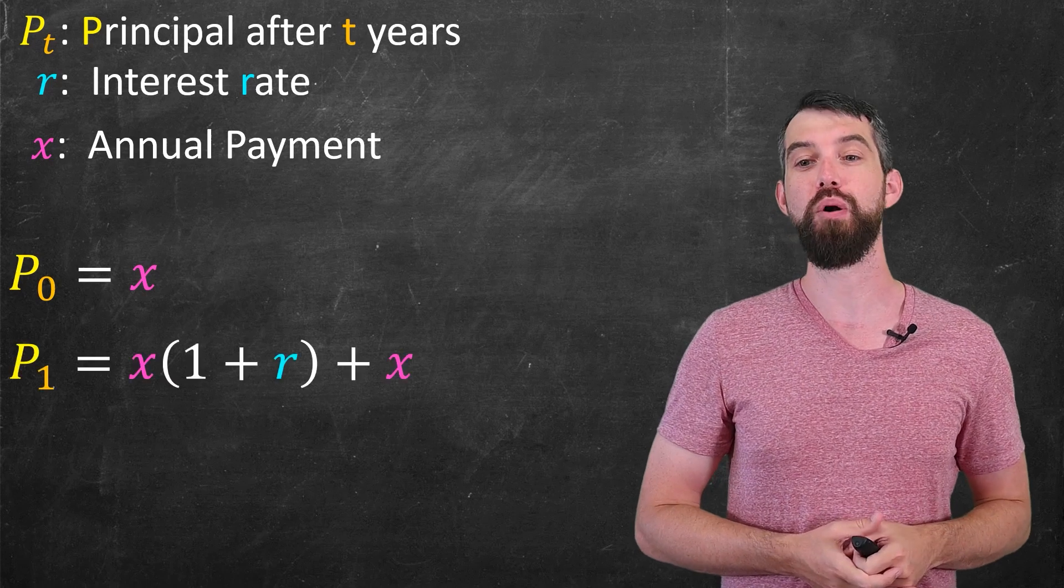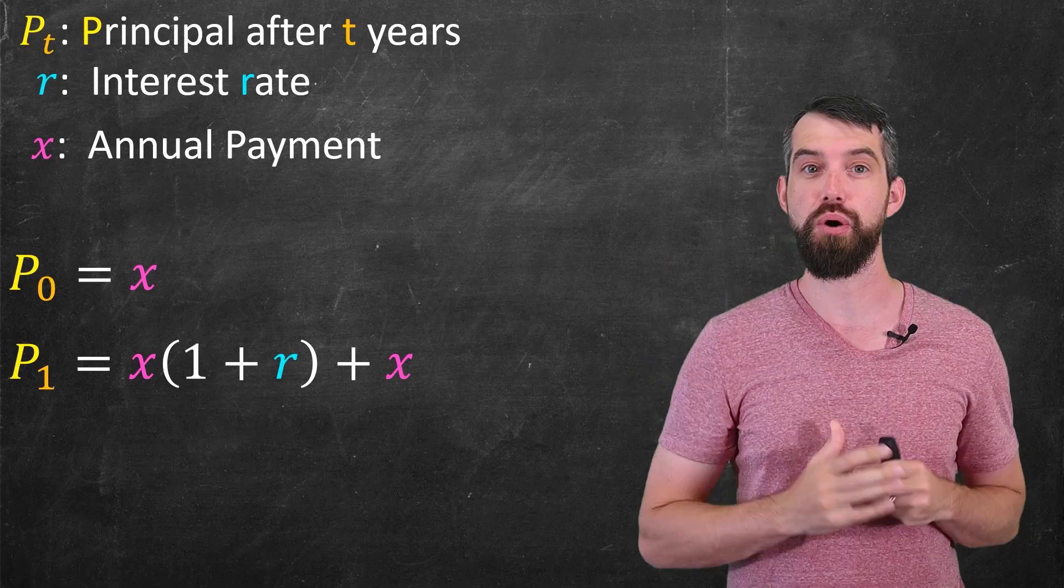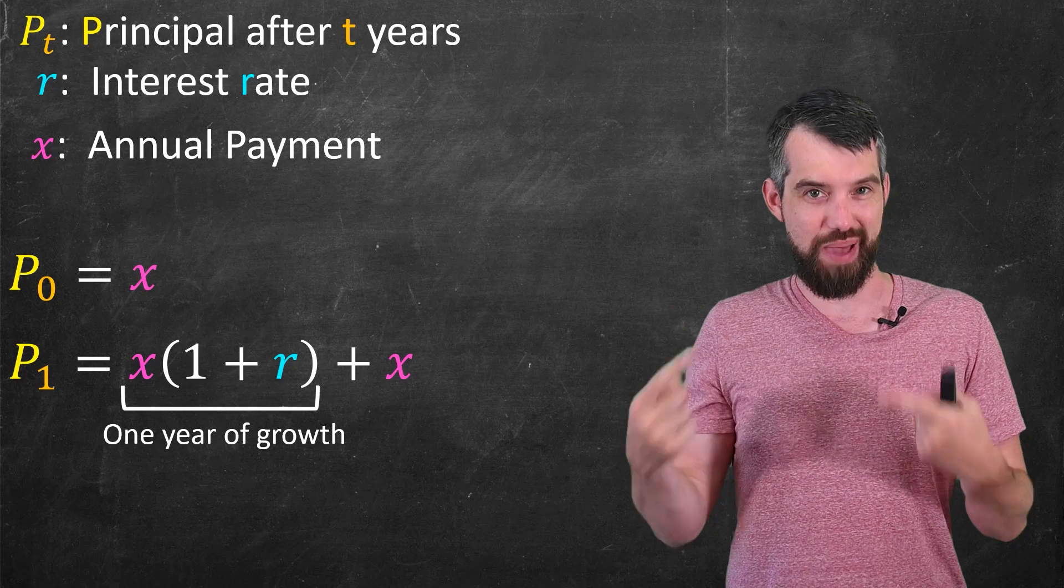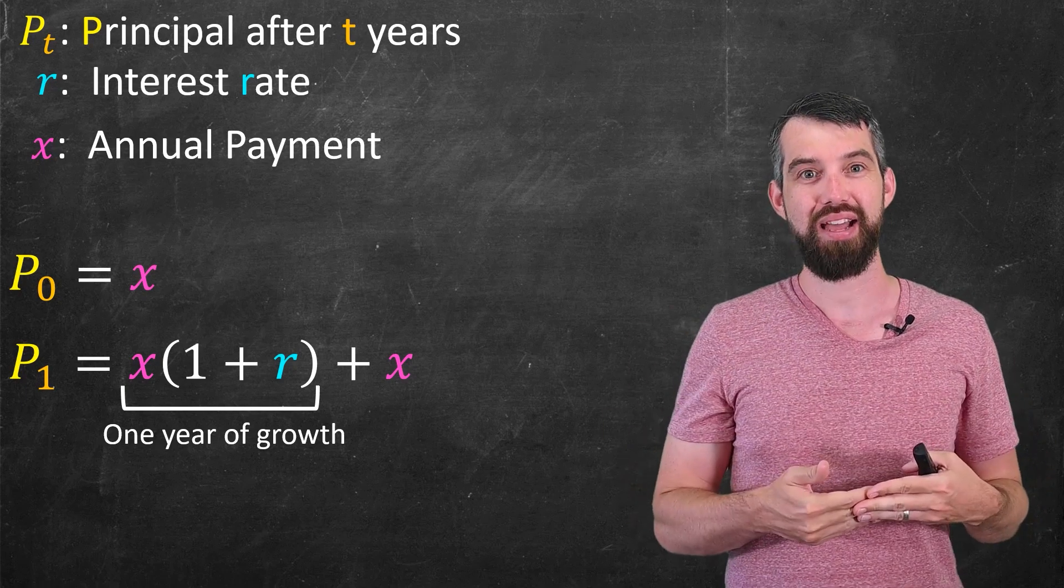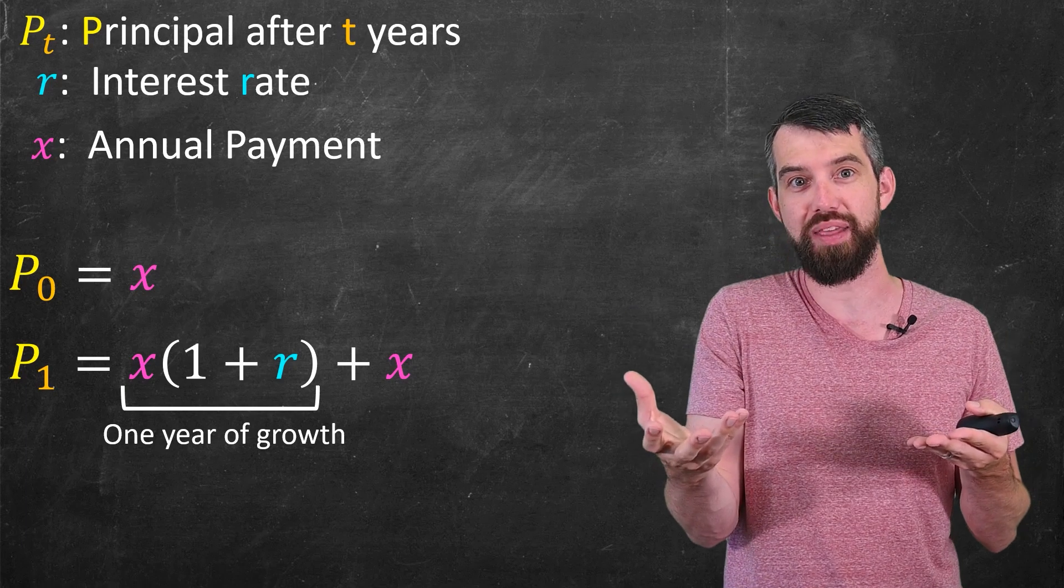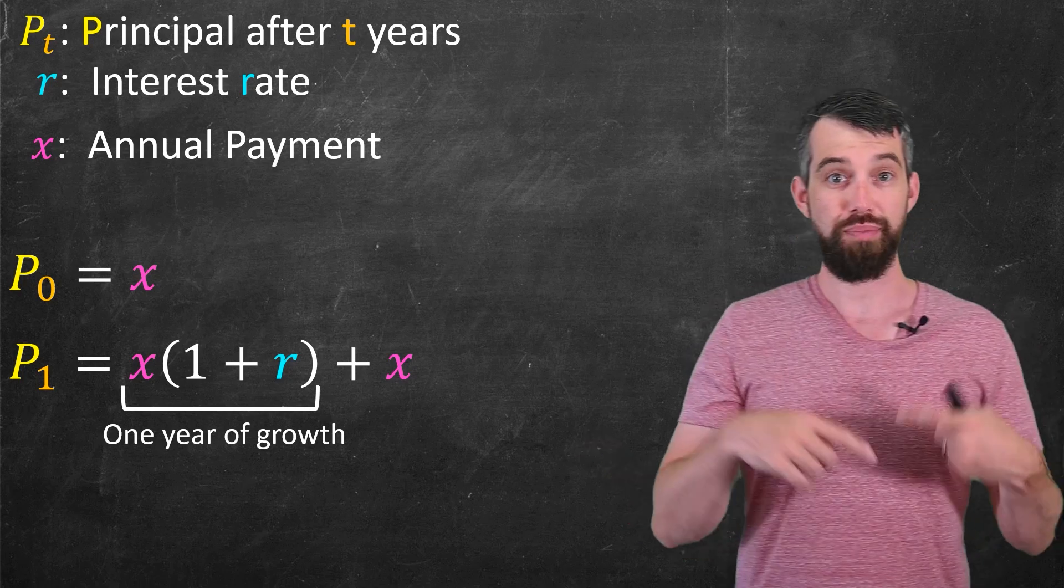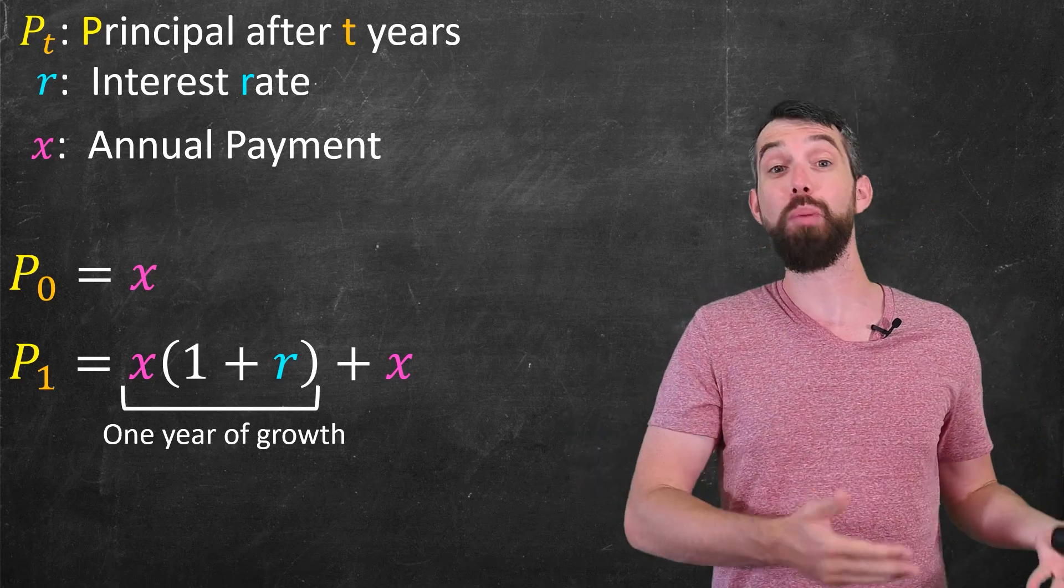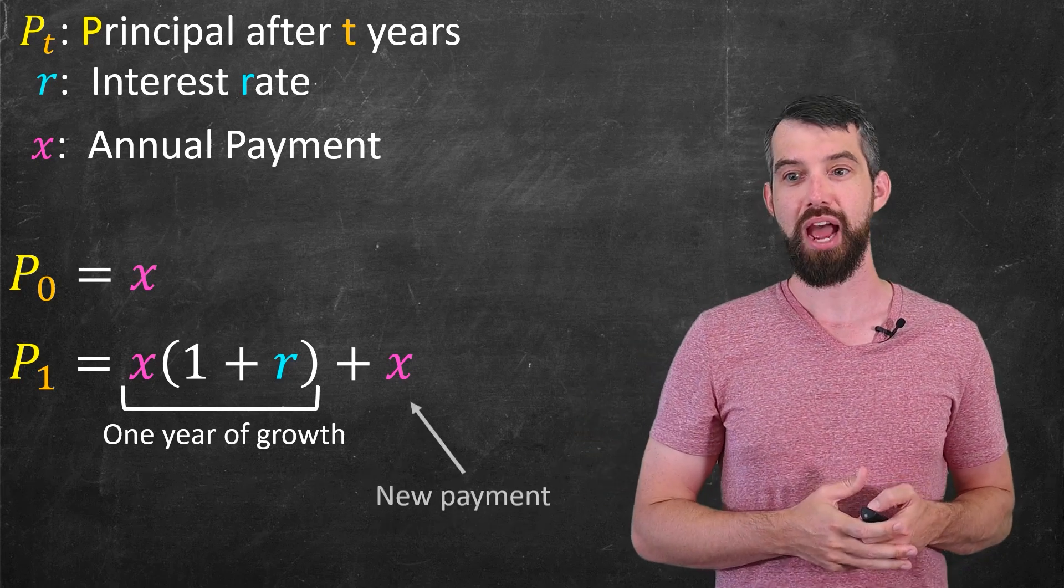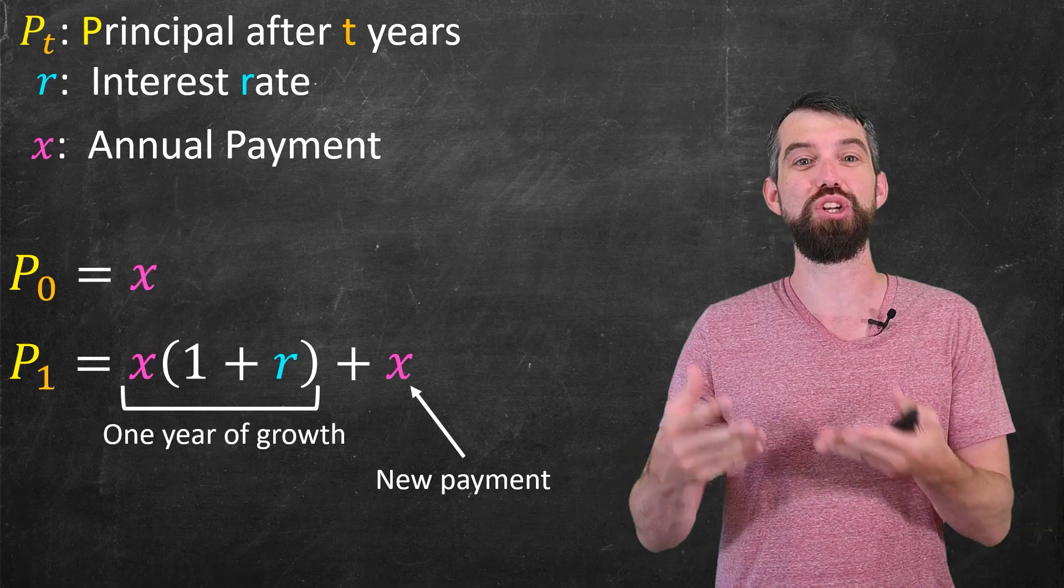Okay, well then, what about P_1? Well, P_1, so what happens in one year, has two different components to it. First of all, there's the growth that happens on the payment that I make today. As in, I started with x, but in one year, the interest rate on this, I'm going to use simple interest here, is just going to be 1 plus r. That is, it's just growing a little bit. It's a little bit bigger than the x that I started with because it had one year to accumulate interest. And then I make a second payment after one year, and so now I get this additional plus x.